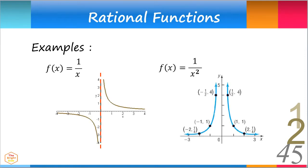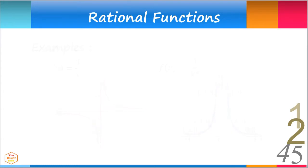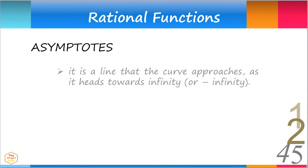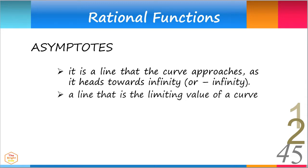One distinct property of rational functions is the presence of asymptotes. Rational functions have asymptotes — a line that the curve approaches as it heads towards infinity or negative infinity. It is a line that is the limiting value of a curve.